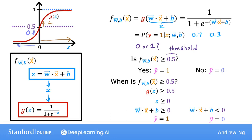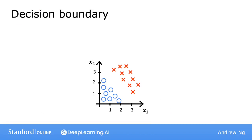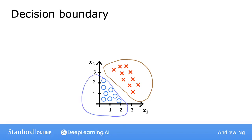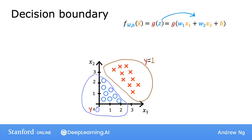Given this, let's now visualize how the model makes predictions. I'm going to take an example of a classification problem where you have two features, x1 and x2. Here's a training set where the little red crosses denote the positive examples and the little blue circles denote negative examples — red crosses correspond to y equals 1, and blue circles correspond to y equals 0. The logistic regression model will make predictions using f of x equals g of z, where z is now w1·x1 plus w2·x2 plus b. Let's say the parameter values are w1 equals 1, w2 equals 1, and b equals negative 3.